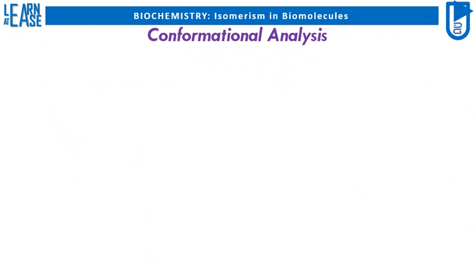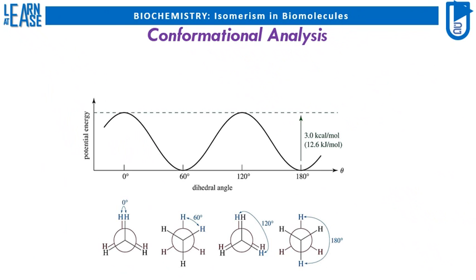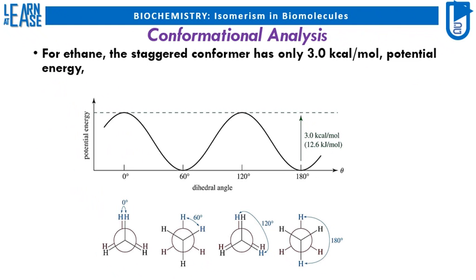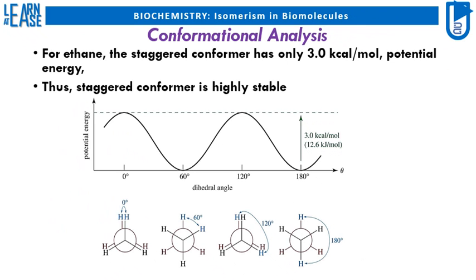Conformational analysis of various ethane conformers is shown in the image as a graph of potential energy versus dihedral angle. Higher the potential energy, more unstable the conformer is, and vice versa. For ethane, the staggered conformer has a potential energy of only 3.0 kilocalories per mole, making the staggered conformer highly stable.